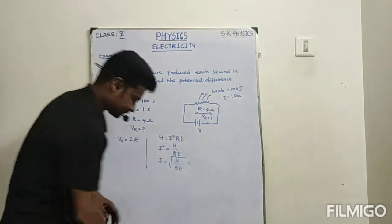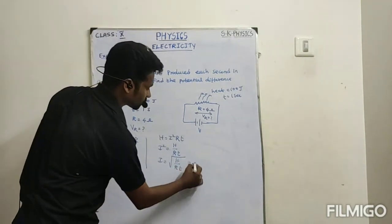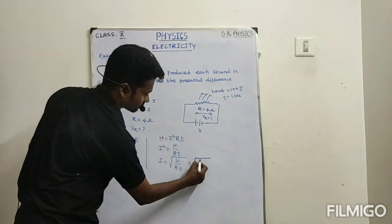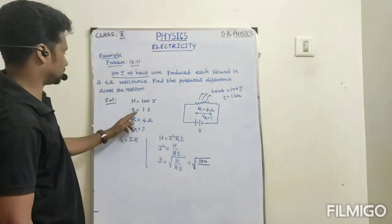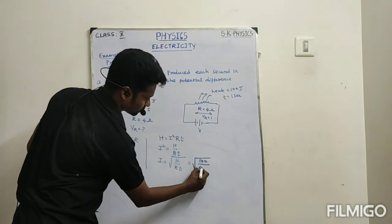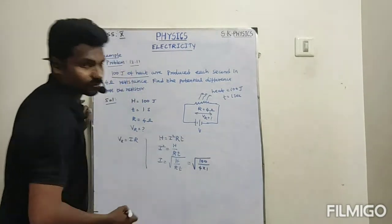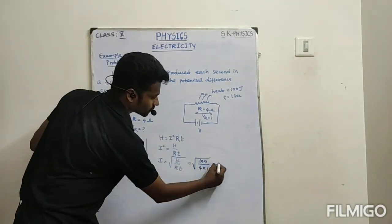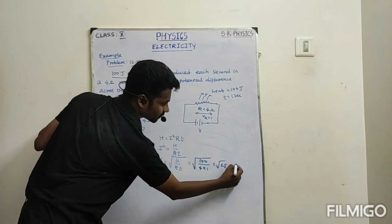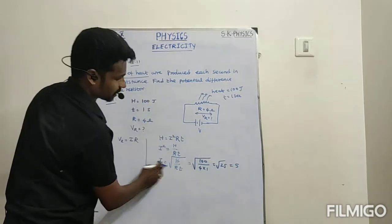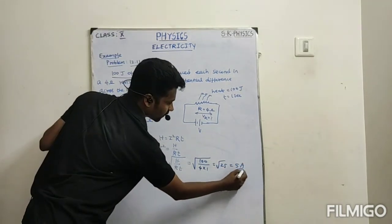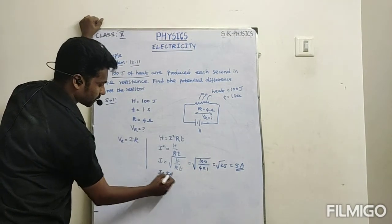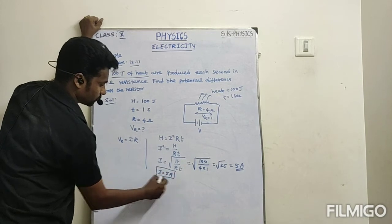So now I can write the square root of H value. Heat value is 100 divided by R value, this resistance is 4, time value per second. So 100 divided by 4, that is 25. Root 25 is equal to 5. So this is the current, it is 5 ampere. I is equal to 5 ampere current.